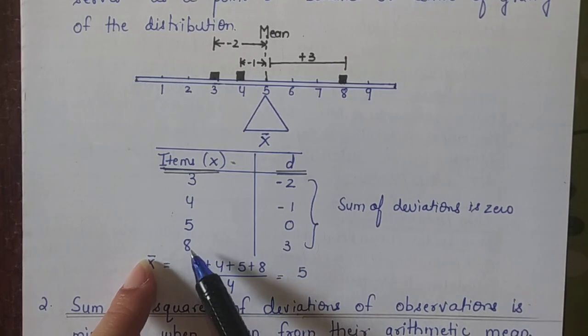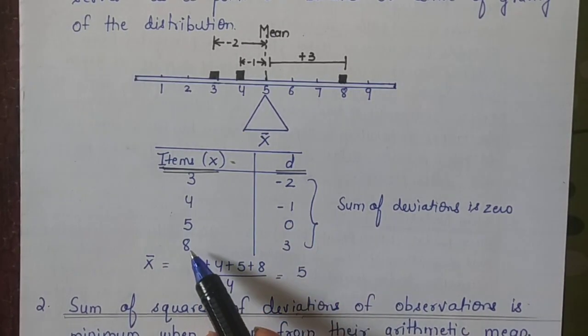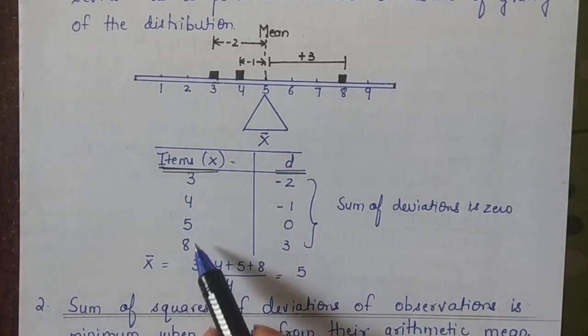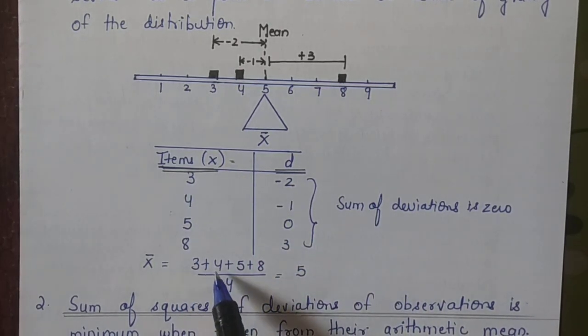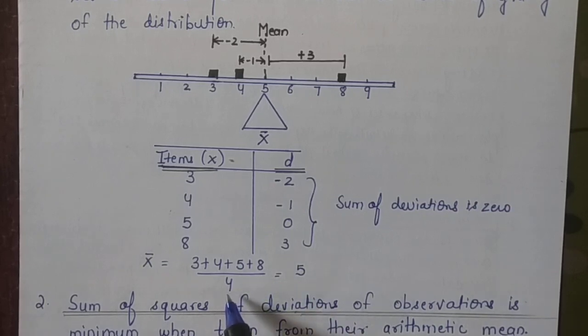I suppose I will give you an example. If suppose we have 4 items, the data is 3, 4, 5, 8. If I take out the mean of these 4 numbers, my mean will be 3 plus 4 plus 5 plus 8 divided by 4, so my mean will be 5.